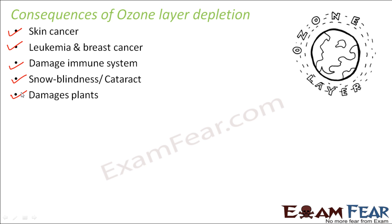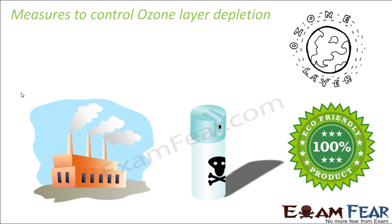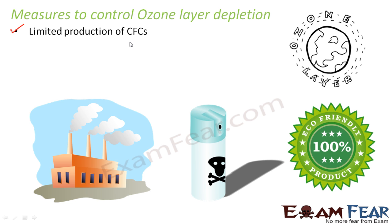These are the harmful effects of ozone layer depletion, and that is why we do not want the ozone layer to get depleted — after all, it is a protection for us. Controlling depletion is all about controlling its causes. The main cause is the use of chlorofluorocarbons, so we have to limit their production. If there are fewer CFCs, there is less probability that chlorine formation will take place in the upper layers, and therefore the probability of destruction of the ozone layer will also reduce.